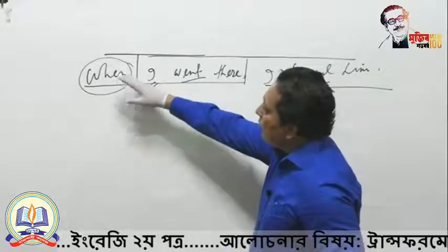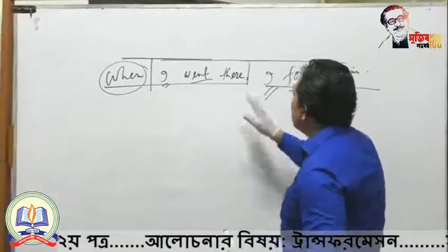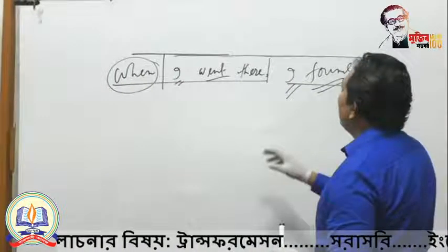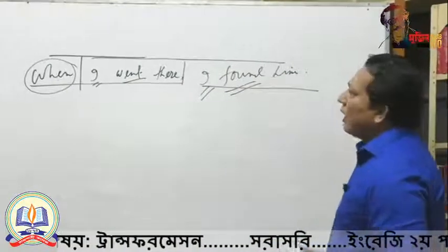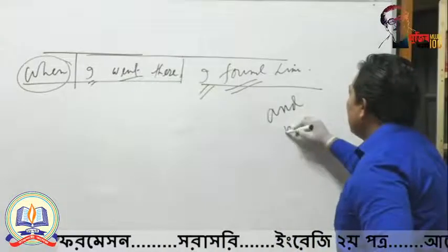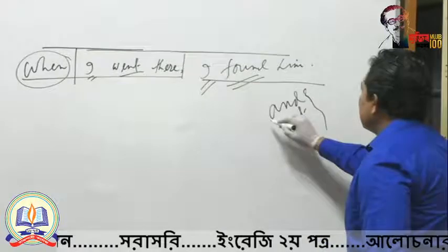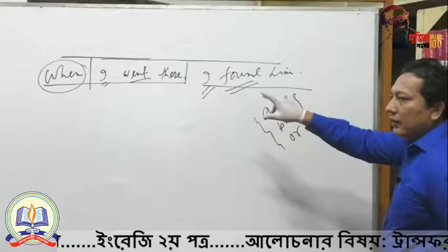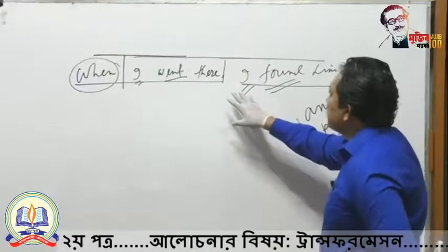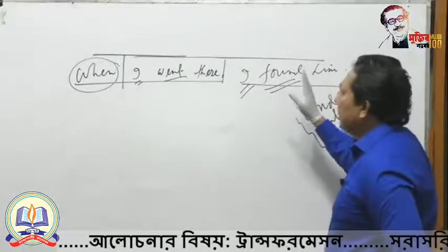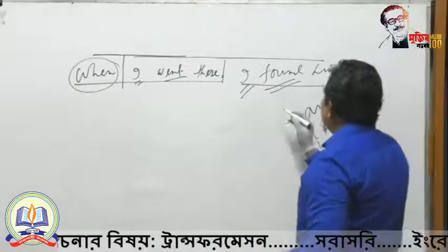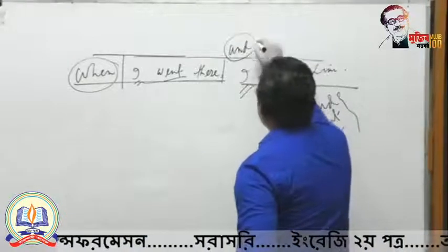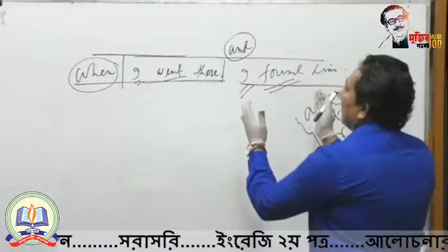So now you have two independent parts: 'I went there' and 'I found him.' You will add these two independent parts by using a coordinating conjunction. The coordinating conjunctions are: and, but, or, and so on. You have to use the conjunction according to the meaning between the two parts. As there is no condition or contrast here, you can use 'and': 'I went there and I found him.'